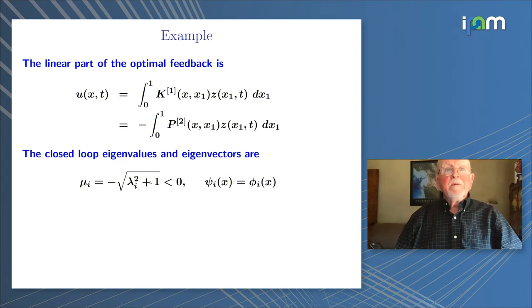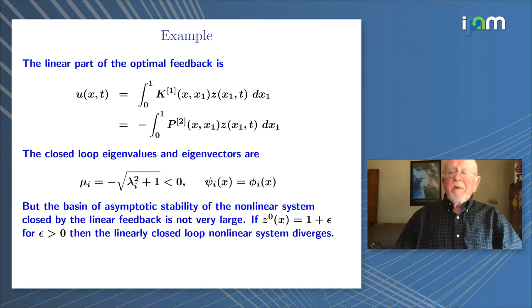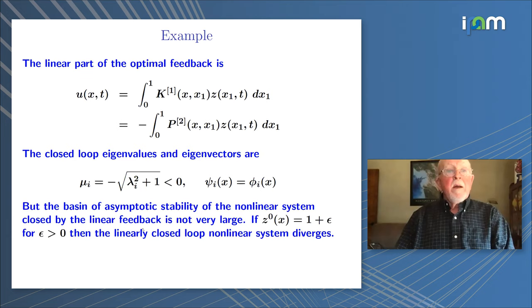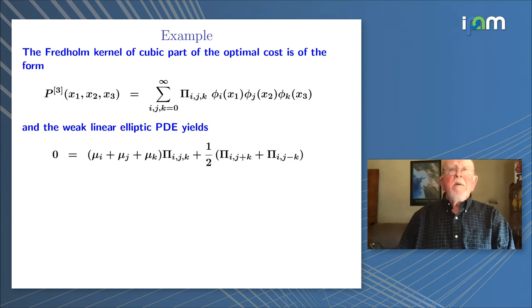The left eigenvectors of the closed-loop linear dynamics are the same as the left eigenvectors of the diffusion operator. However, the basin of asymptotic stability is not particularly large. If we take a constant initial temperature slightly higher than one, the quadratic term drives things unstable — so we need higher-degree feedback. The Fredholm kernel of the cubic part, where psi and phi are the same in this example, gives a weak linear elliptic PDE with resonance terms from the squared terms.